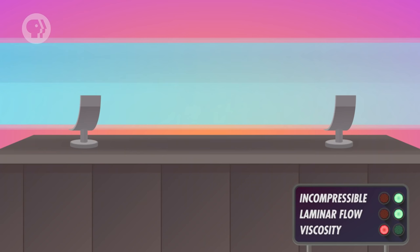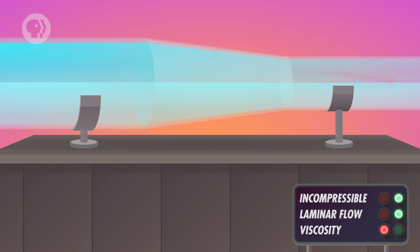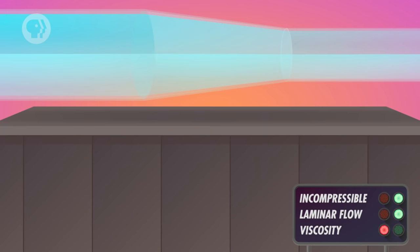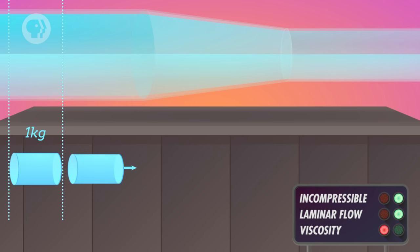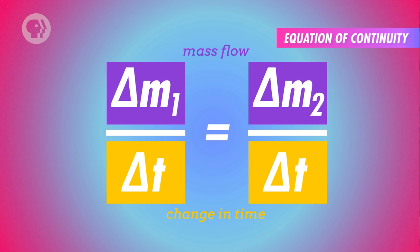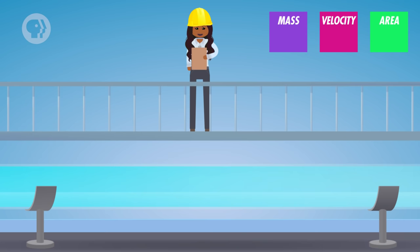Say you have some water under all these hypothetical conditions in a pipe moving along smoothly. This pipe narrows about halfway through so one end is more narrow than the other. This shape is going to affect some properties of the water's flow as it passes through the narrow side compared to the wider side. But one thing that won't change is the mass of water moving through any given area of the pipe over time — the mass flow rate — which is always the same everywhere in the pipe. This is called the equation of continuity, and it can tell you a lot about the relationship between the velocity of a fluid and the cross-sectional area of the pipe.